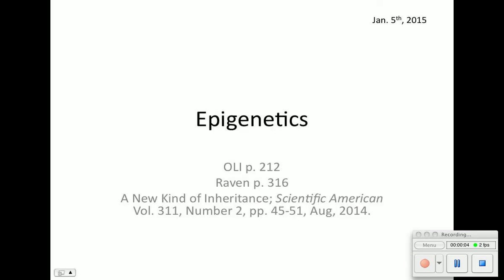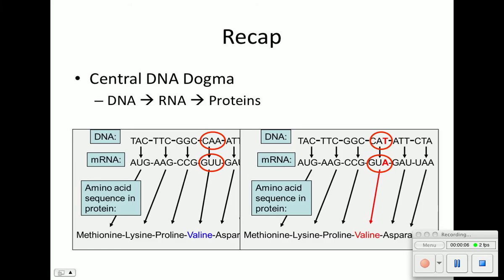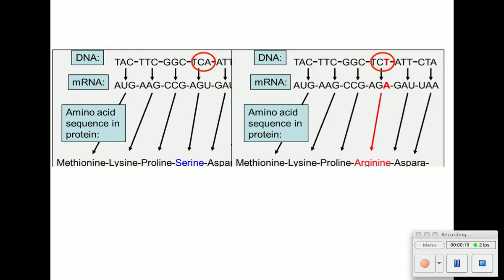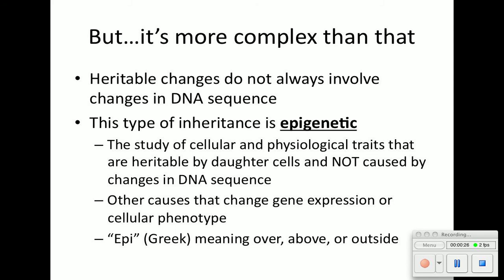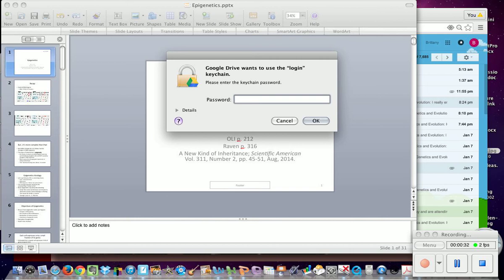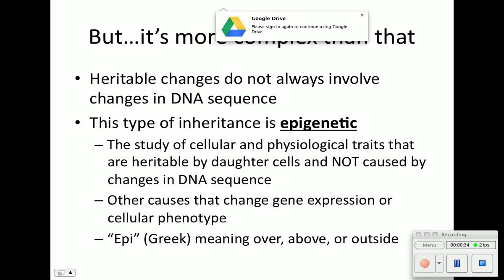Alright, so this lecture is on epigenetics. Just to recap, we have our central DNA dogma where we go from DNA to RNA to proteins. Sometimes changes in the DNA can result in the same amino acids coded in our final protein, so it's harmless. But sometimes mutations can change the amino acid, which could potentially change the function of our protein. Sometimes changes don't always involve the DNA sequence, and when it doesn't, it's called epigenetics.